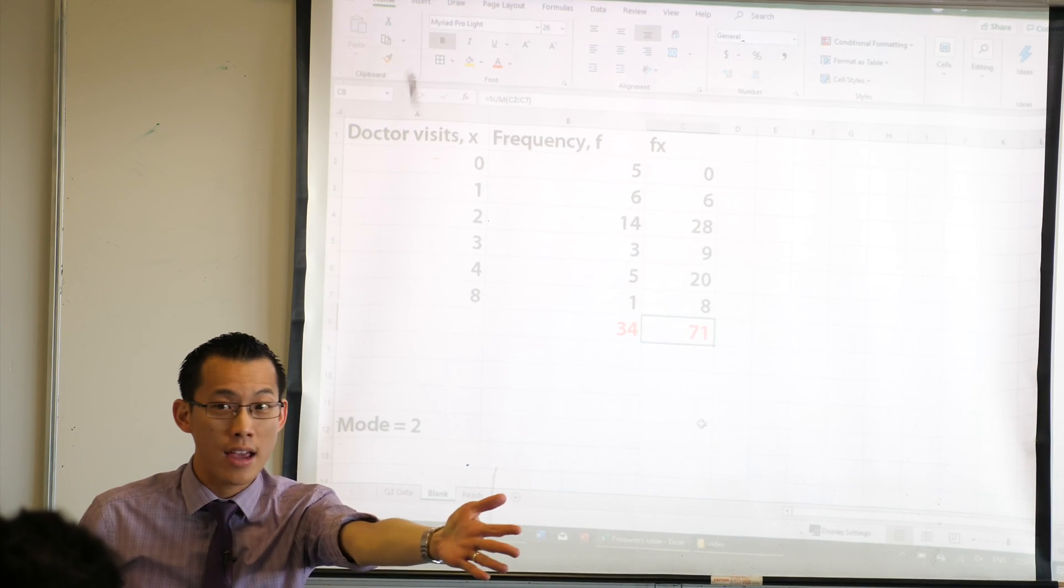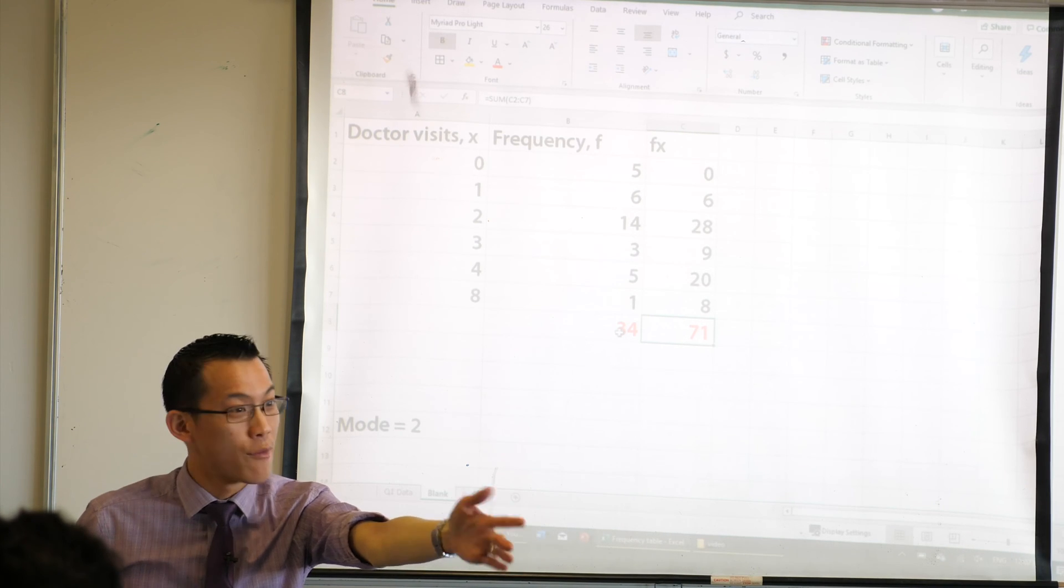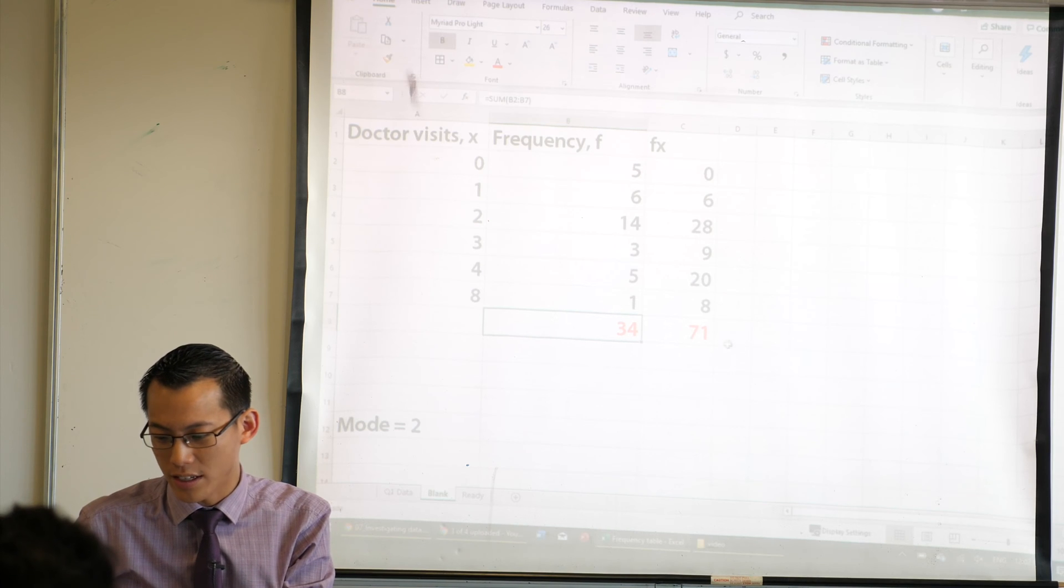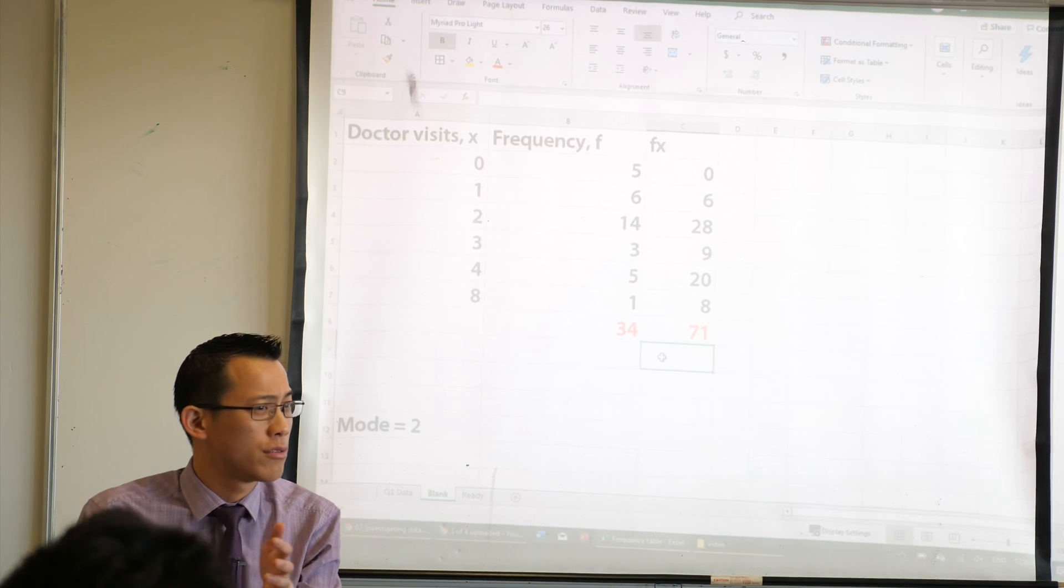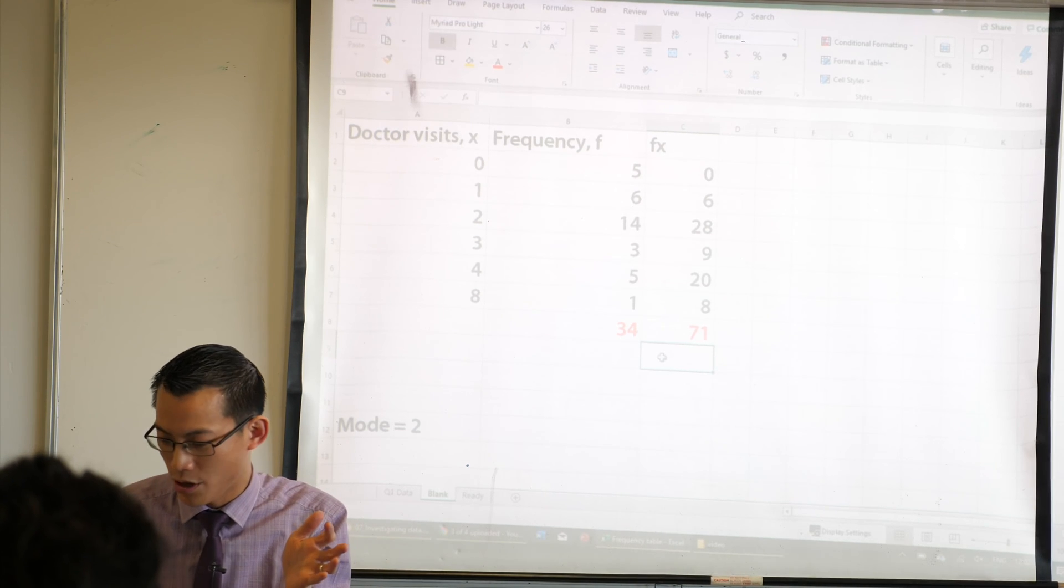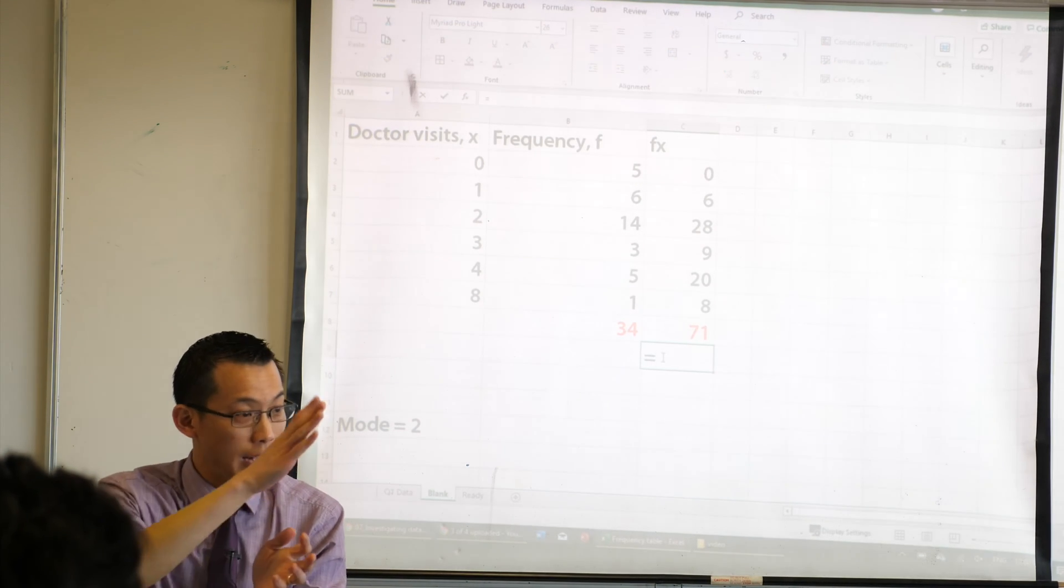What do you do with that to get the mean? Divide by? Divide by however many people I've got, which we already established is 34. So we can go ahead and we can divide that. You know how there's no multiplication button on your keyboard? There's no division button either?